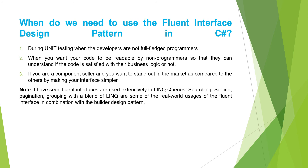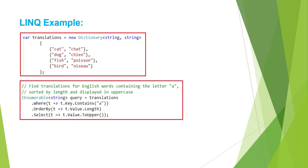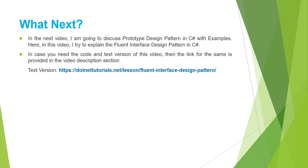Let us understand the LINQ example. Suppose we have a dictionary — a translation dictionary containing data in the form of string key-value pairs. We need to find translations for English words containing the letter 'a', sorted by length, and displayed in uppercase. Using LINQ extension methods and method chaining we can achieve this very easily by calling the Where, OrderBy, and Select methods one after another using the dot operator. This is possible because Where, OrderBy, and Select are implemented as extension methods on IEnumerable, and all these methods return an object of IEnumerable type.